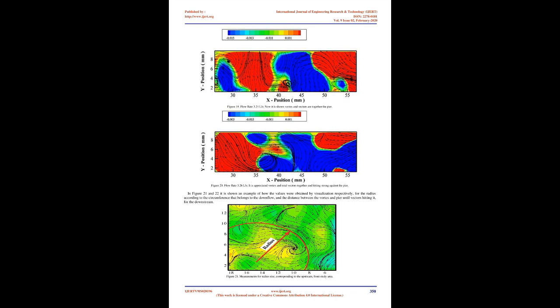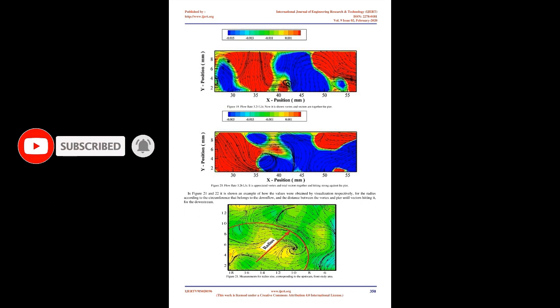Figures 16 to 20 show vorticity at different flow rates corresponding to the downstream rear study area. At low flow rate the turbulence is minimal, but as it increases, high vorticity is generated and water flow hits the pier strongly. Figure 22 shows a developed function about distance between pier and vortex at different speeds. The measurements for distance were taken from downstream figures by visualization, and standard deviation S and correlation R² were also obtained. Figures 21 and 22 show examples of how values were obtained by visualization for the radius of the downflow circumference and the distance between the vortex and pier for the downstream area.